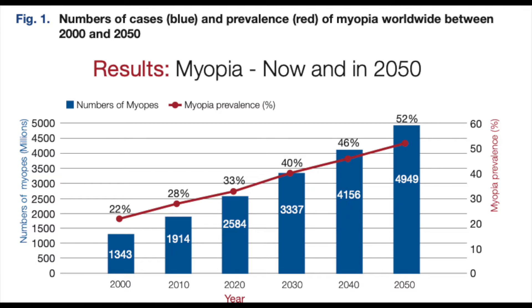Projecting forward to 2050, it's expected that almost 5 billion people — 52% of the world's population — will be myopic. That's an astronomically high number.